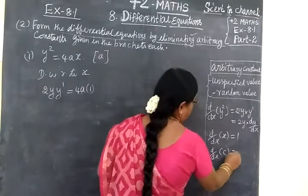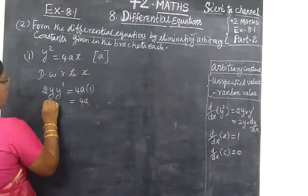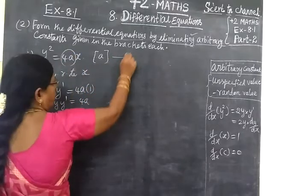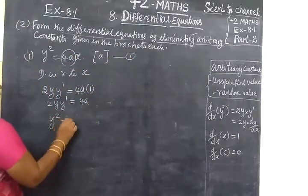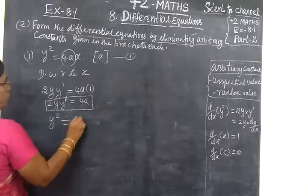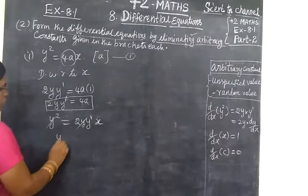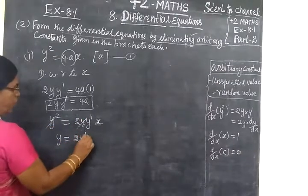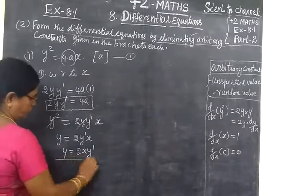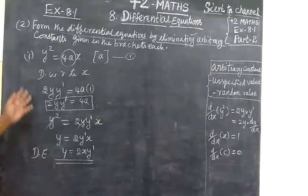D/dx of constant equals 0. So, 4a equals 2y·y'. That's why 4a equals 2y·y' — this equation 1 is good. So, y² equals — instead of 4a, you are substituting 2y·y'. So, 2y·y'. Now, y cancels. So, y equals 2y'. You write it here: 2x·y'. That's the y. So, this is the differential equation without arbitrary constant. First sum over.